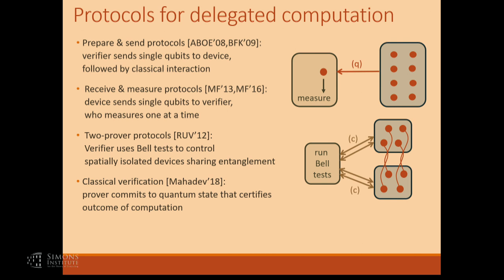The protocol has a little bit of a different flavor than the other protocols. It doesn't work directly in the circuit model where you direct the prover to perform certain gates one at a time. It takes a more global approach, where you require the prover to prepare a certain quantum state that certifies that the outcome of the computation is a certain thing. Then the prover reveals information about that state classically in a way that allows you to verify the existence of the state and, as a corollary, the fact that the computation had a certain outcome.